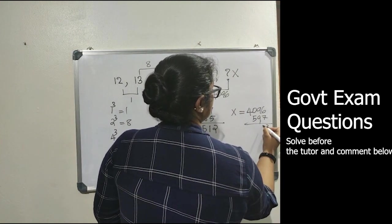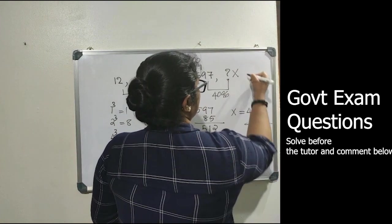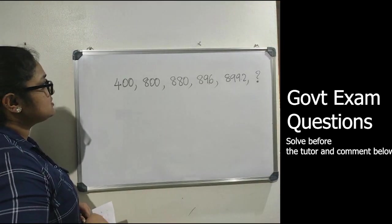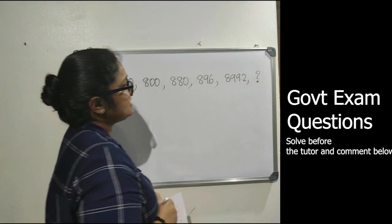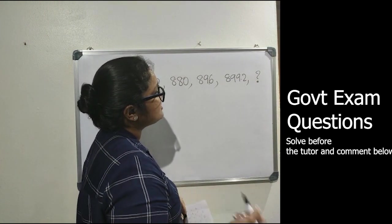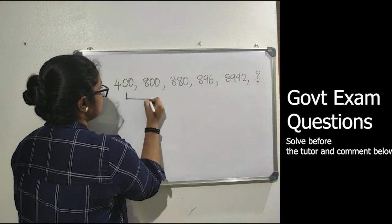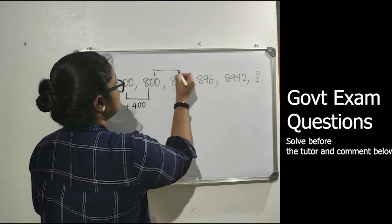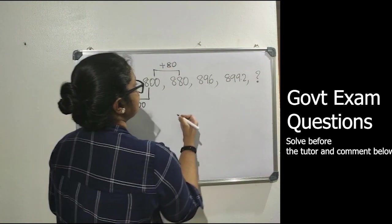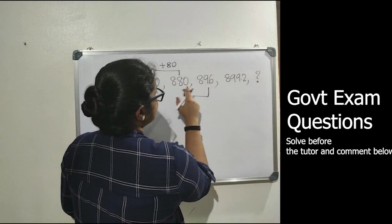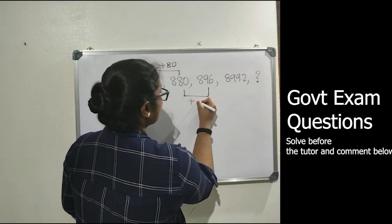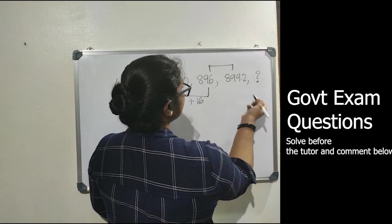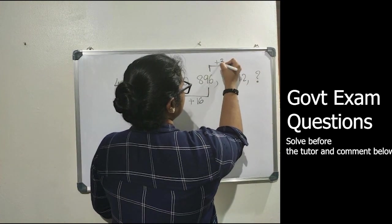Next question is 400, 800, 888, 896, 899.2, and the last number is unknown. Here the difference is 400, then 88, then 8, then 3.2.